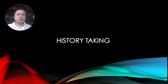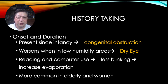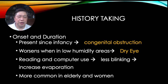When talking to patients to solve their problem, you need to become an investigator. Ask about the onset and duration of their tearing. If it's been present since infancy, you're probably dealing with congenital obstruction — most of the time the valve of Hasner. Sometimes waiting for a year is enough, as the valve usually becomes patent even without intervention, but sometimes surgery is needed.